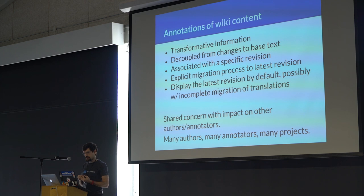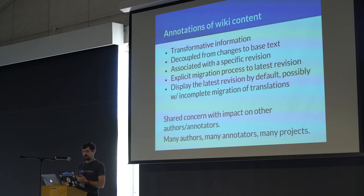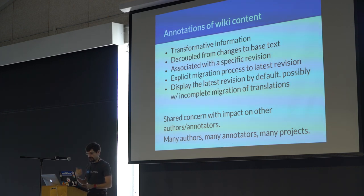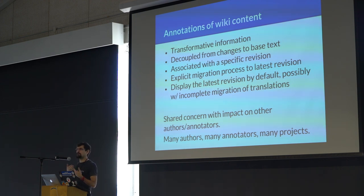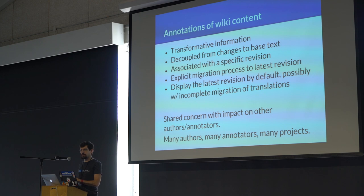The annotation is associated with a specific revision of the base content, although that revision might not stay current long. There's an explicit migration process, which is slightly different for each type of annotation we support. We can't simply assume that the annotation is going to apply after edits have been made, although we can provide good tools to migrate them quickly when the annotation does apply. As a cultural matter, we've found it's important to make it very obvious when something is broken and needs to be fixed. When an edit is made to Wikipedia it goes live immediately, so if the edit is wrong, it quickly gets noticed and reverted. Similarly, if an edit invalidates the translation, we make that very obvious — we display the untranslated text for that paragraph so speakers of that language can notice something's wrong and update the translation.